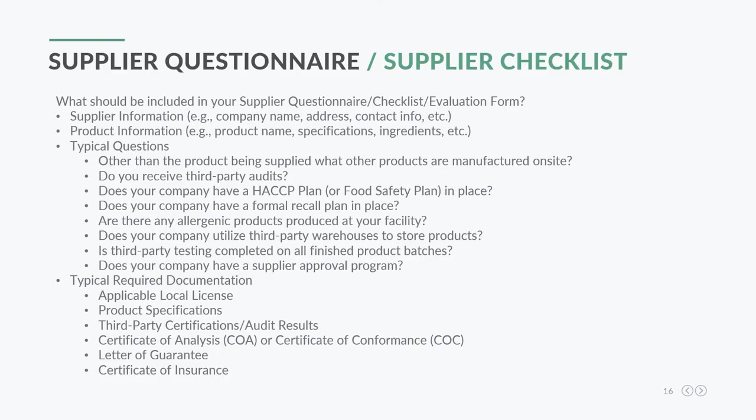The supplier questionnaire and checklist are essentially similar documents. They should include supplier information — company name, address, contact info — and product information like the product name, specifications, and ingredients. Typical questions include: other than the product being supplied, what other products are you manufacturing on site? Maybe they're also producing traditional food and beverage products alongside their CBD or cannabis line, so we need to understand if they're producing allergens and how that interacts with the cannabis line.